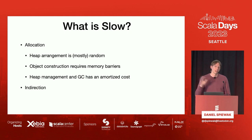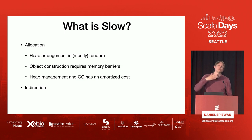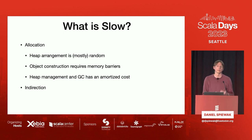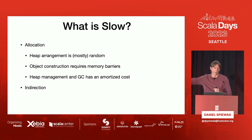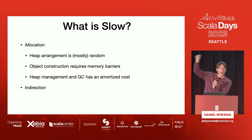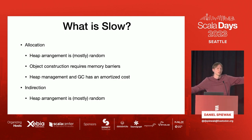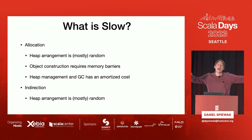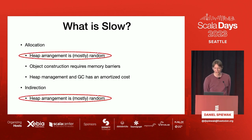The other thing that's really slow is indirection. We don't usually think about pointers in Scala or Java the way we do in C, but everything that's an object in Scala is a pointer, and you have to follow that on the heap to figure out what's going on. That's really slow because heap arrangement is generally random. So if you're taking a theme away from here: the heap is real, real bad. Don't use it.